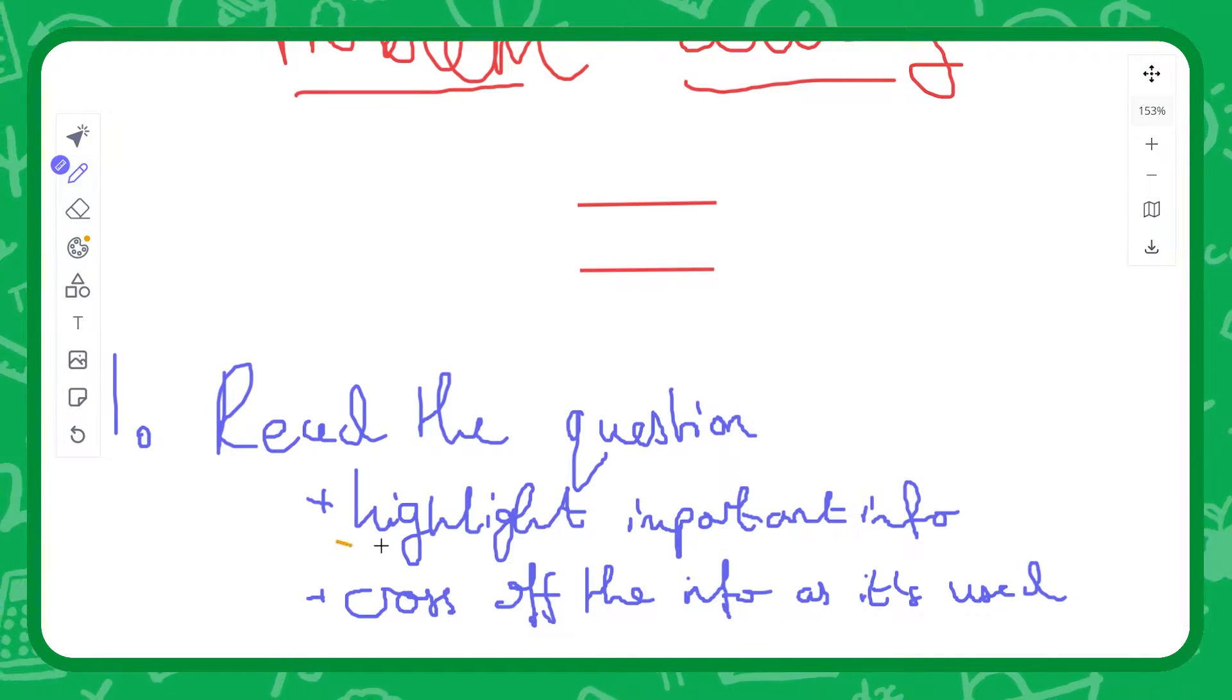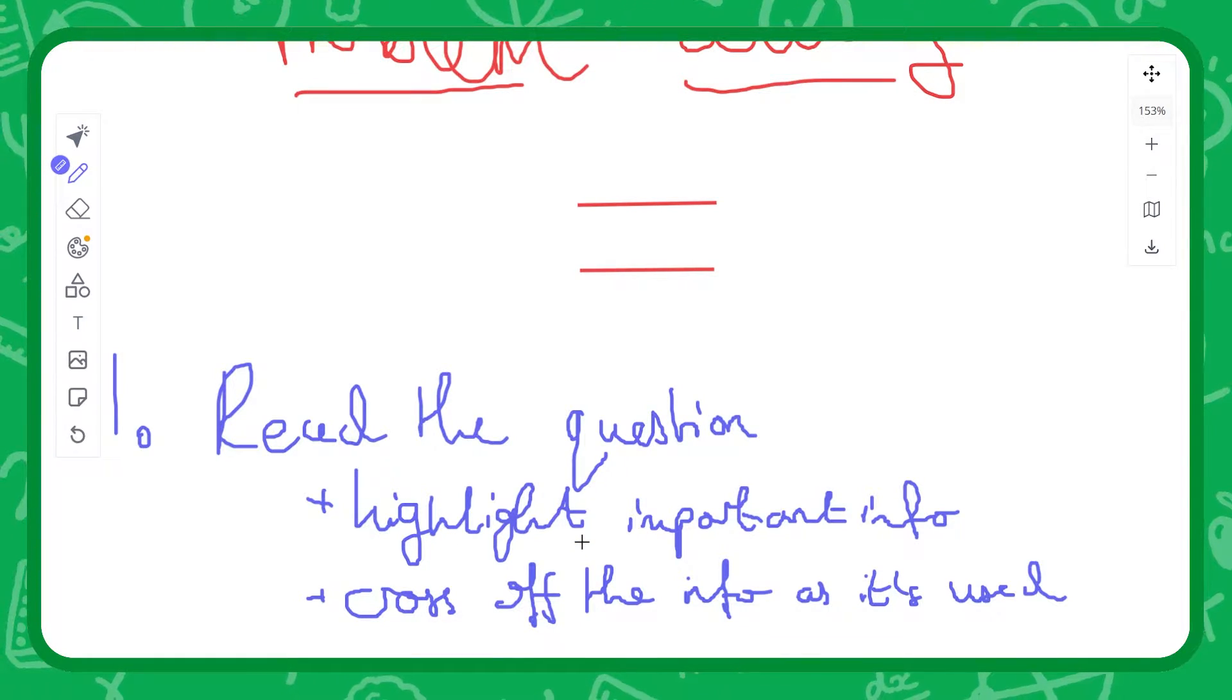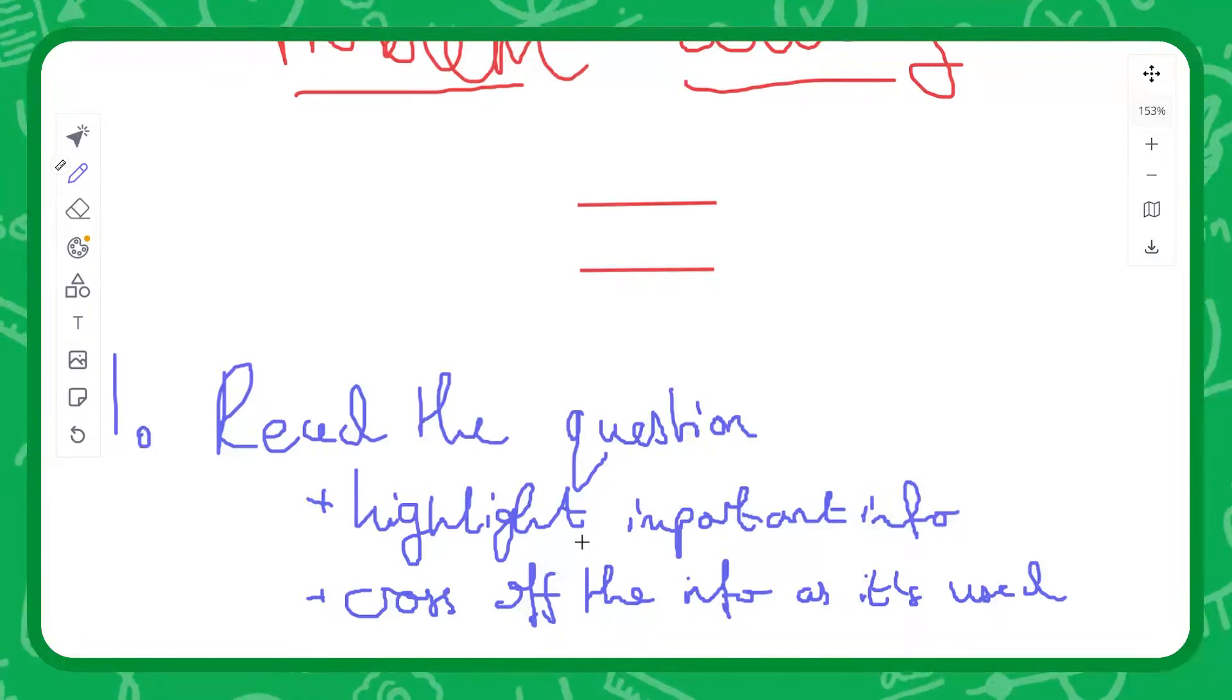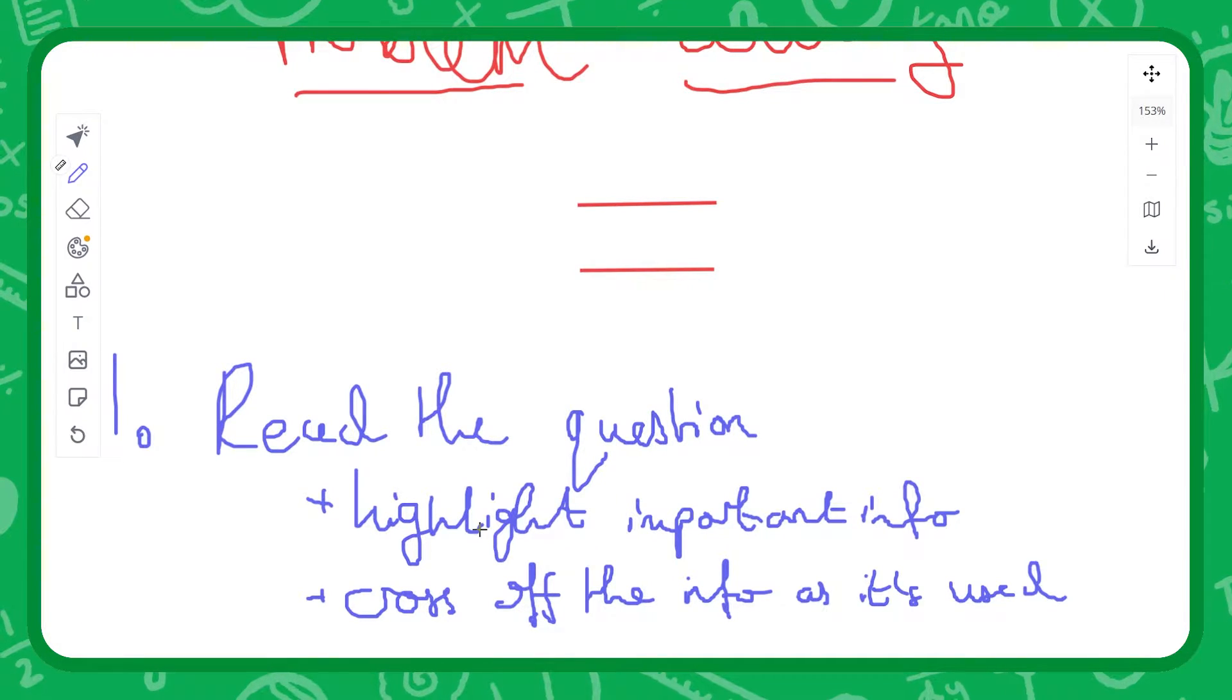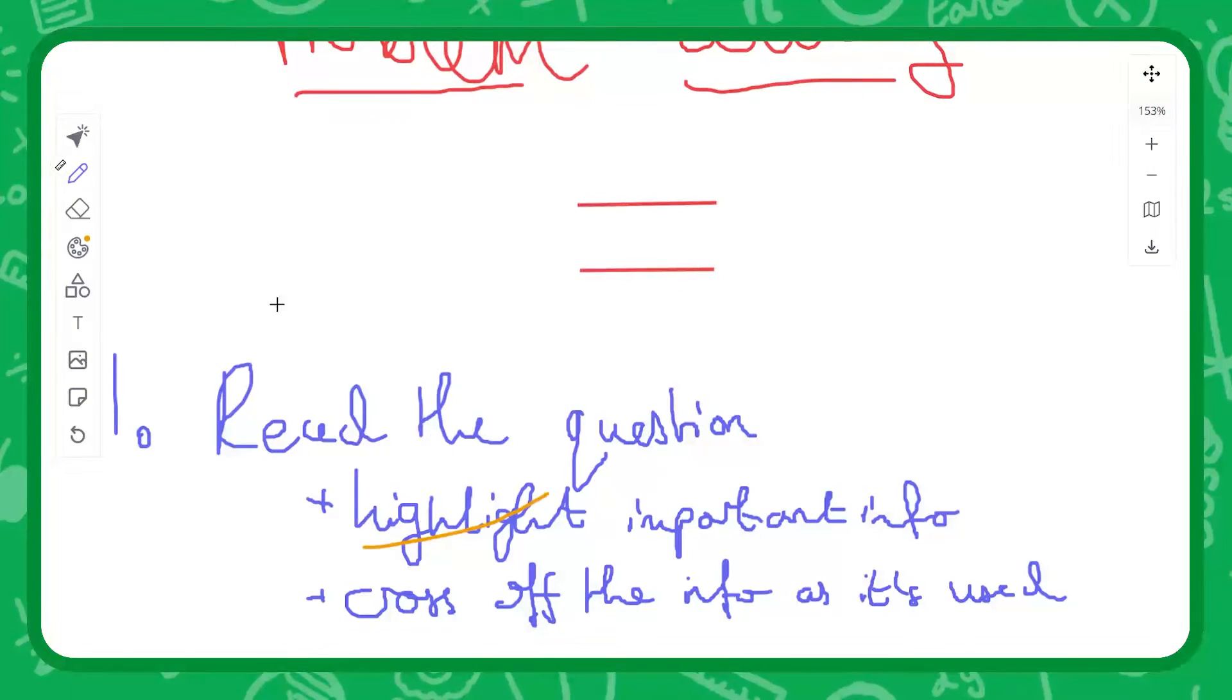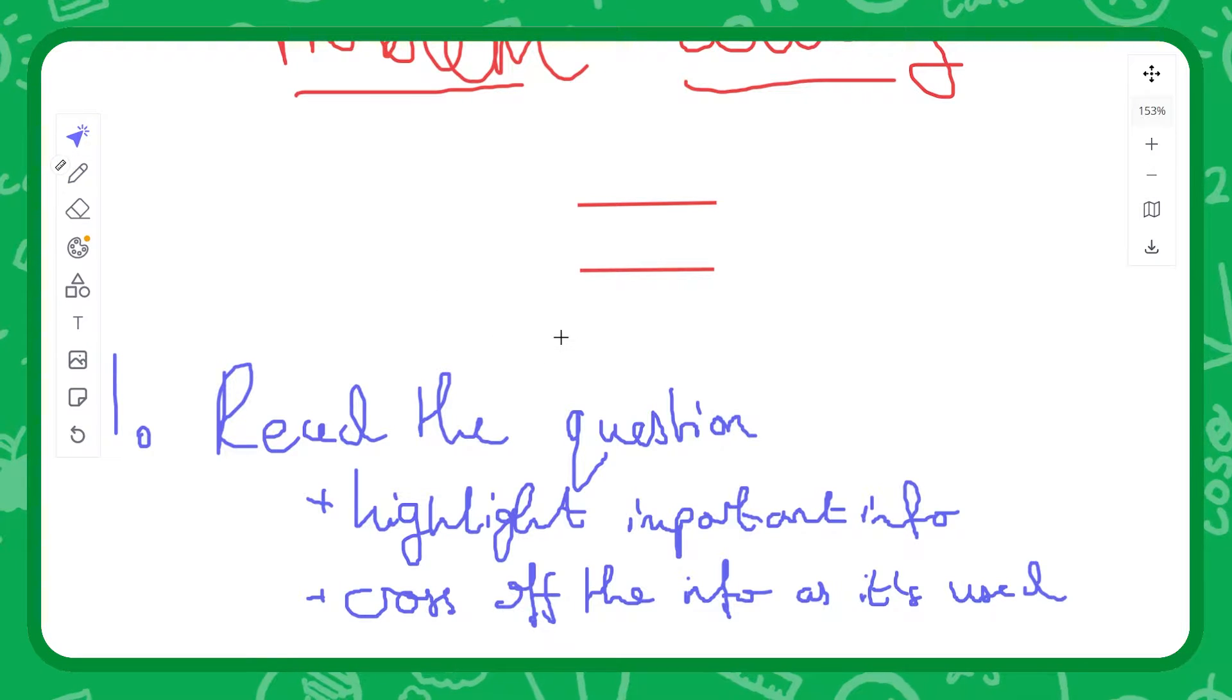Highlighting useful information is useful, but what I also find is quite a useful step is to then cross off information as it's used in a question. For example, if you're asked to use a particular set of weights in the question, usually you'll only need to use any one of those weights once, so once you use something you can just cross it off. I find that can reduce the amount of information overload you might be experiencing during the exam.